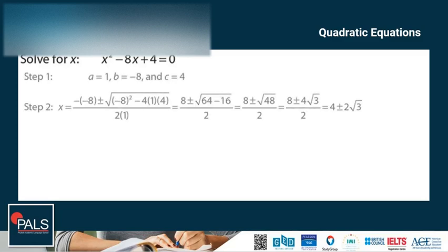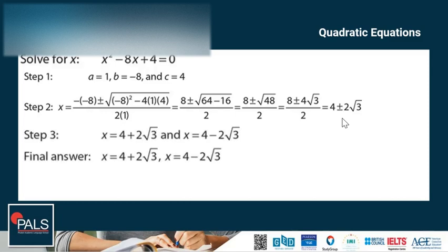Another example: solve for x, x squared minus 8x plus 4 is equal to 0. Step 1: a is equal to 1, b is equal to negative 8, and c is equal to 4. Step 2: Plug in all the values and simplify — after simplifying we have 4 plus or minus 2 times the square root of 3. Step 3: Use the plus and minus to show the two final answers. Since we cannot simplify further, the final answer is x is equal to 4 plus 2 times the square root of 3 and x is equal to 4 minus 2 times the square root of 3.